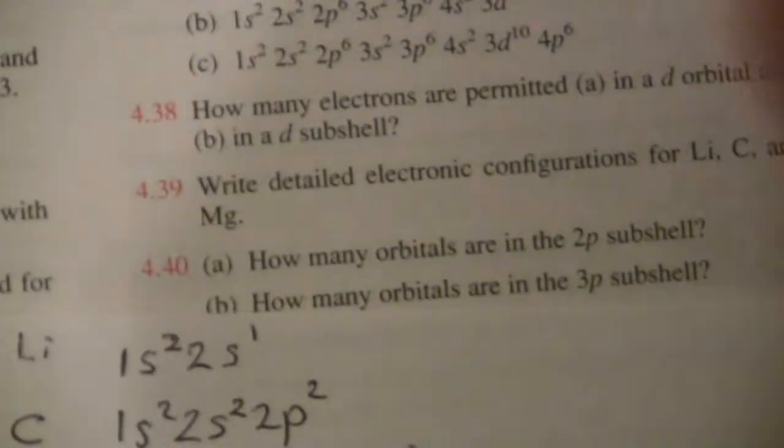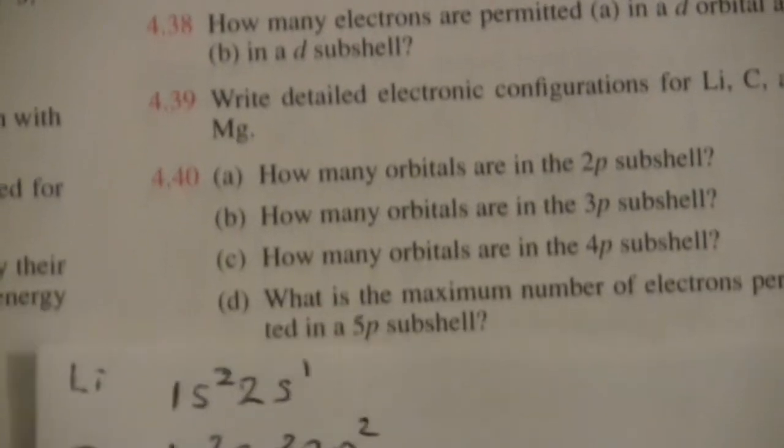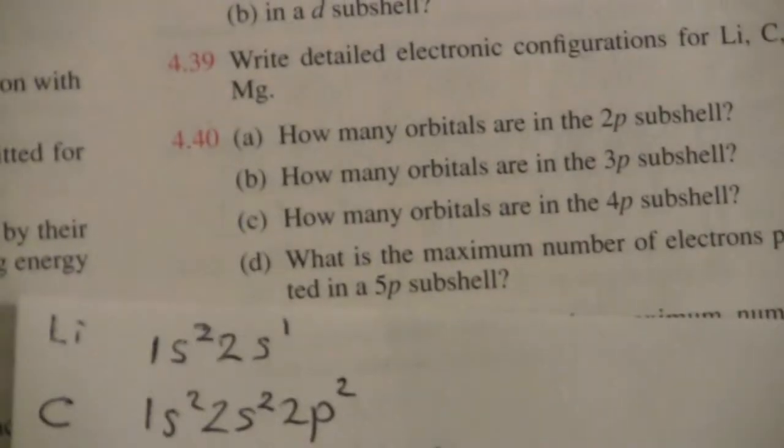I'll just do a few more here. How many orbitals are in the 2p subshell? Well, p, you're thinking of the p-wing, that's when l equals 1,